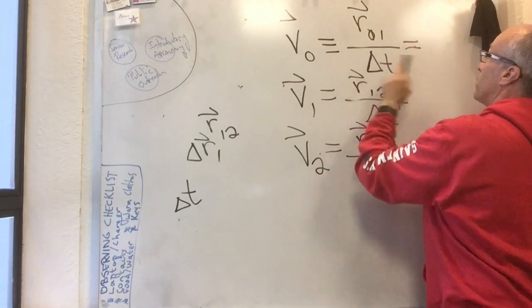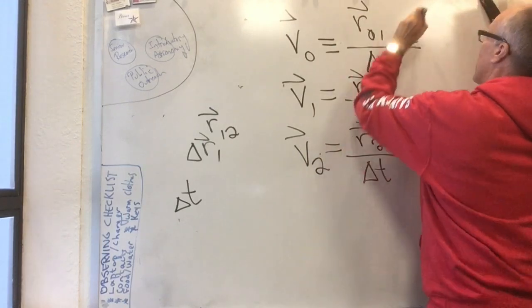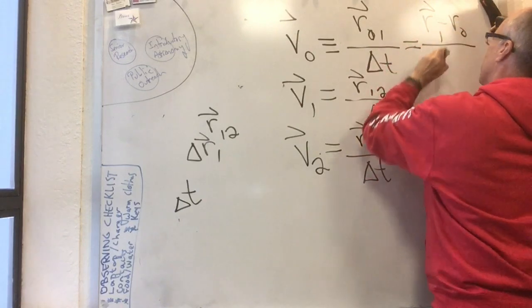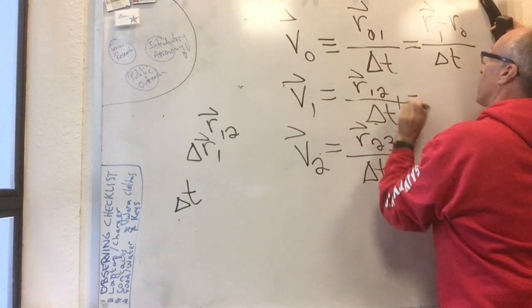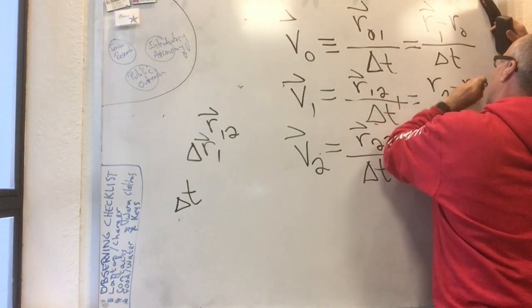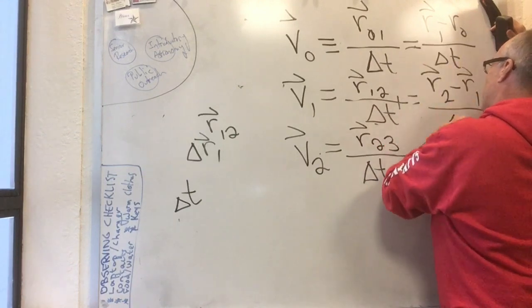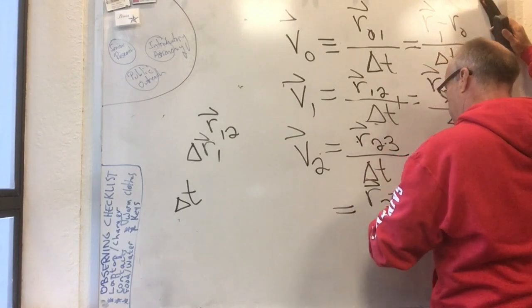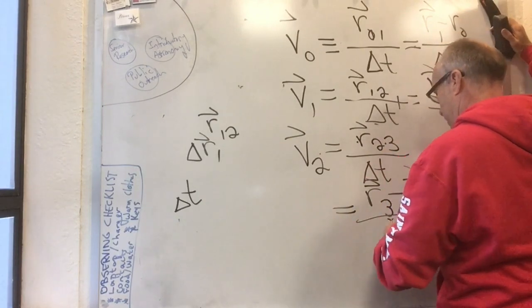Using the definition of r naught 1, I could write this as r1 minus r0 over delta t. I could write this as r2 minus r1 over delta t. And finally, I could write this as r3 minus r2 over delta t.